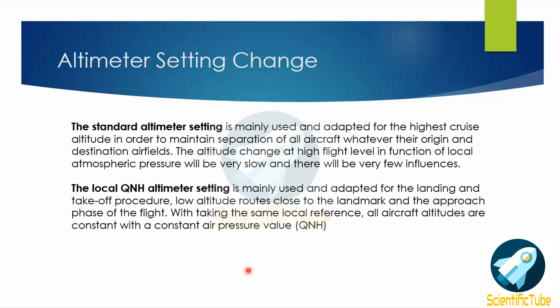Now let's look at the altimeter setting change. The standard altimeter setting is mainly used for high cruise altitude in order to maintain separation of all aircraft regardless of their origin and destination. At high flight levels, altitude changes due to local atmospheric pressure are very slow with very little influence. The local QNH altimeter setting is mainly used for landing and takeoff procedures, low altitude routes close to landmarks, and the approach phase. With the same local reference, all aircraft altitudes are consistent with a constant air pressure value.